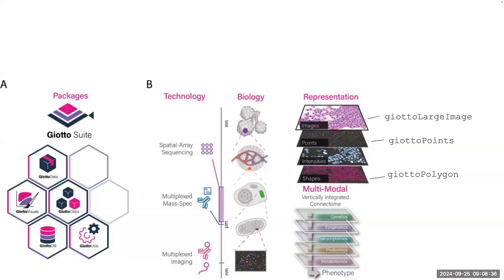In terms of the information actually being measured, it's also the type of assay — genetic information, genomics, proteomics. At its core, Giotto is supposed to be very generic, such that it encompasses different types of technologies, biology, and any sort of spatial information into one object.